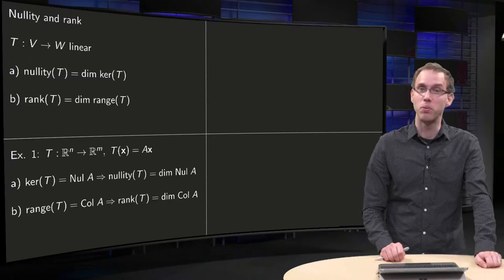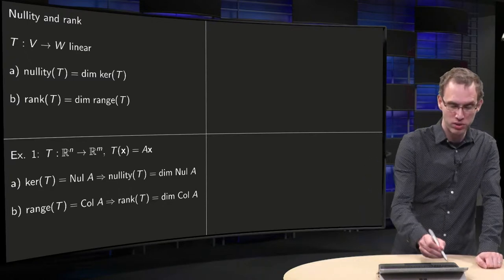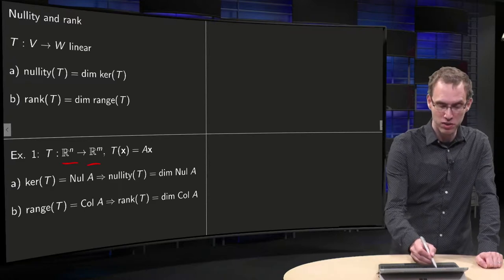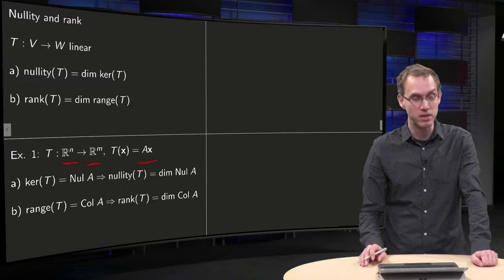Let's do some examples. If you have a matrix transformation, so T goes from R^n to R^m, T(x) equals A times x where A is an m by n matrix,